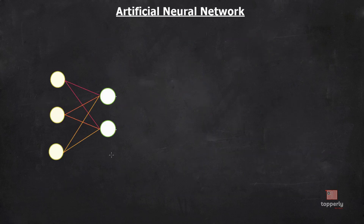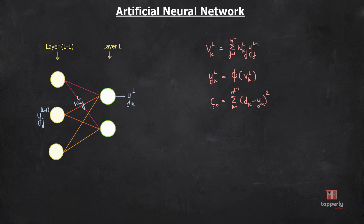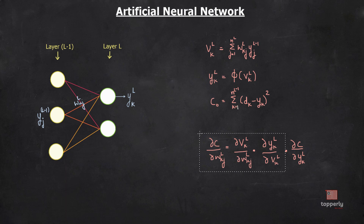Here is a slightly more complex neural network. Labeling the layers as L and L-1, and using subscript k for output neurons and j for input neurons, the weight between layers L and L-1 is denoted W_{kj}^L. The equation for V_k^L becomes Σ_j W_{kj}^L · Y_j^{L-1} where j ranges from 1 to n_L. The cost function becomes Σ_k (D_k − Y_k)² over all output neurons. If you do the math, the gradient equations don't change at all — we just added subscripts.